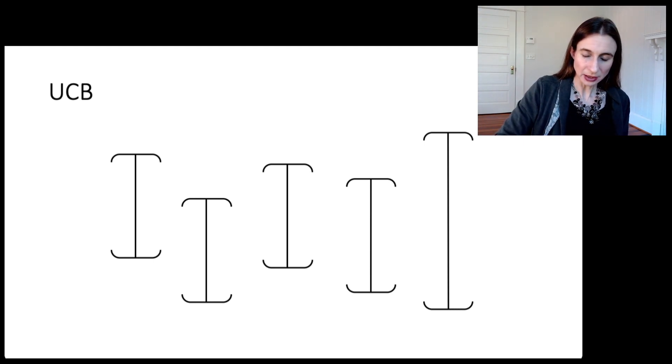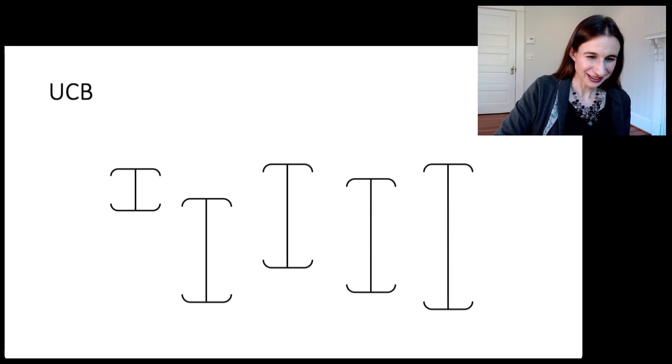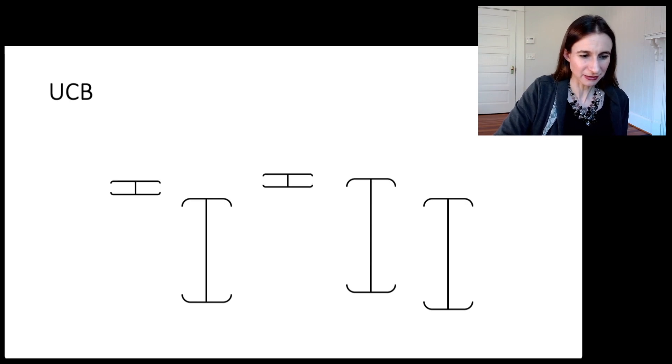So then it looks like arm five could potentially be the best. So we pick that one. Now let's say maybe it's arm one. We learned something about that arm. That arm looks pretty promising. And then arm one again. The confidence interval shrunk down a little bit. Now it seems to be a three-way tie. So let's pick one of them. Let's say arm three and then maybe arm one, five, three, three again, one. It's like a horse race here.